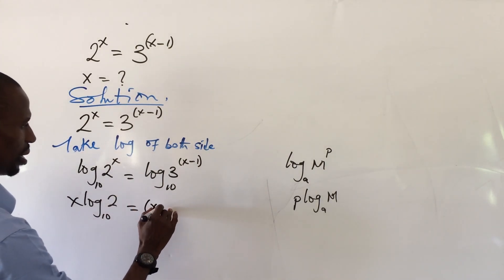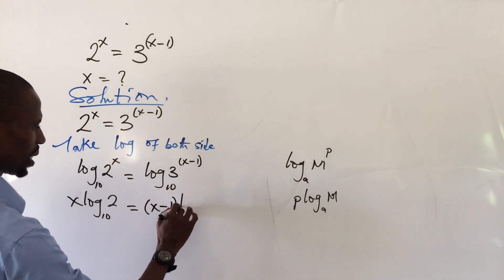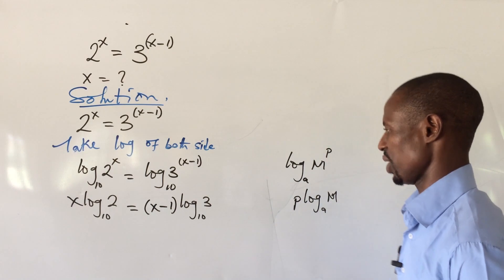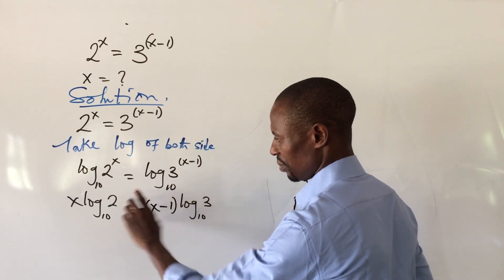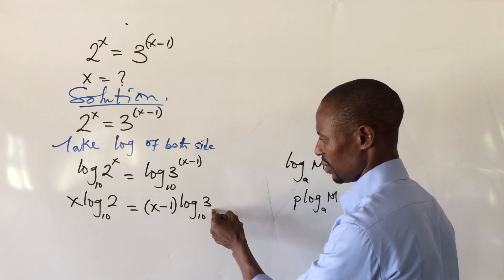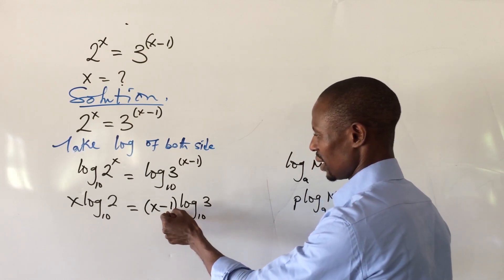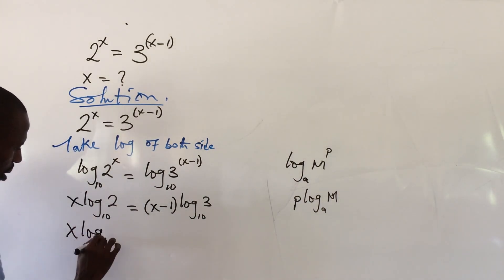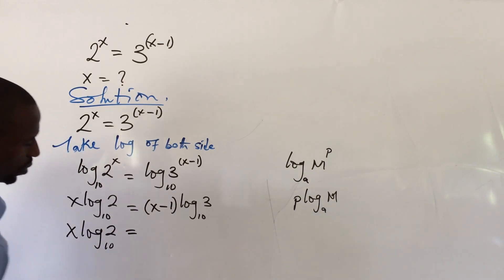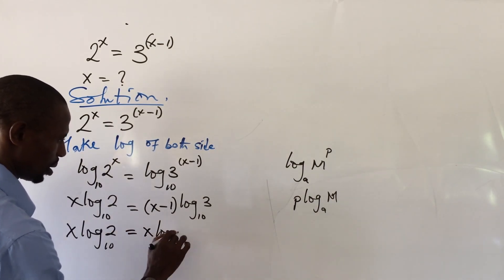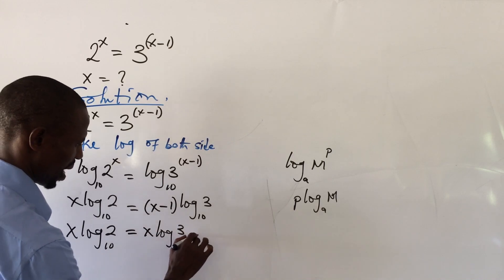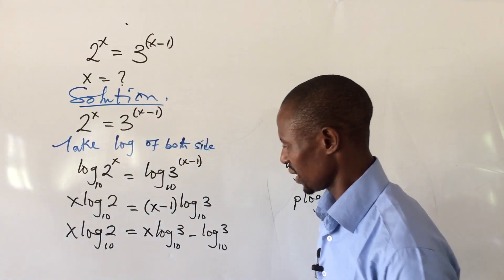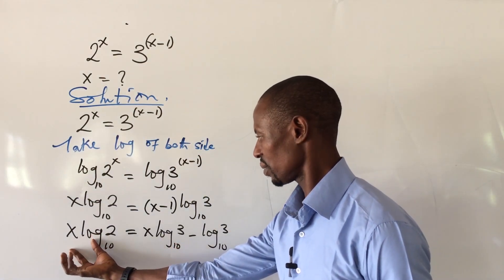Now I want to use the distributive property to expand this bracket. Opening up (x minus 1) log 3 gives us x times log 3 (base 10) minus 1 times log 3 (base 10). So we have: x log 2 (base 10) equals x log 3 (base 10) minus log 3 (base 10).